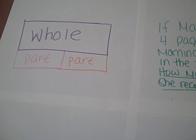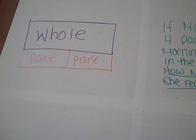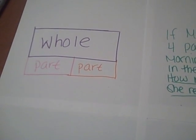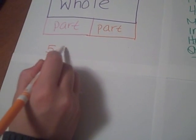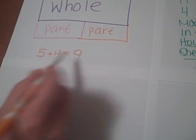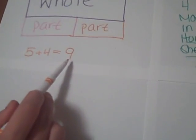So if we apply this to an addition example, we can have two parts equals the whole. So we can do 5 plus 4 equals 9, because those are the two smaller parts equals the bigger number.